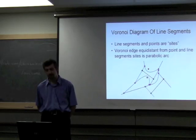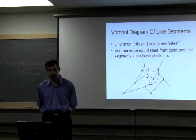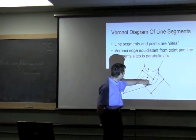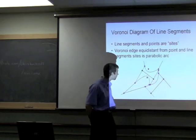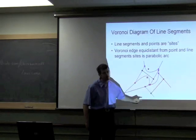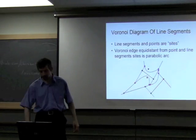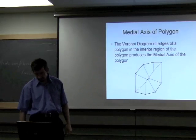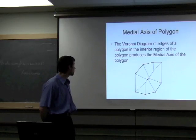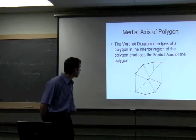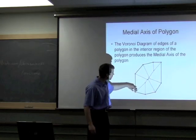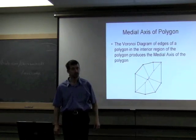The Voronoi diagram of line segments extends sites to include segments. The Voronoi edges may be a parabolic arc, where you're equidistant from a point and a segment. We usually model the endpoints separately. Another related problem is the medial axis of the polygon, distinct from straight skeleton. The medial axis is essentially the Voronoi diagram of the line segments restricted to the interior of the polygon.